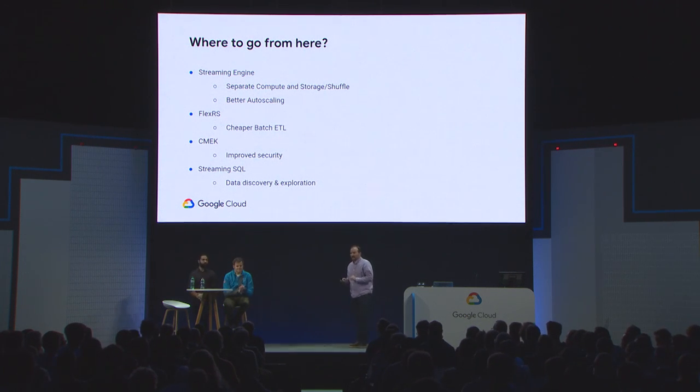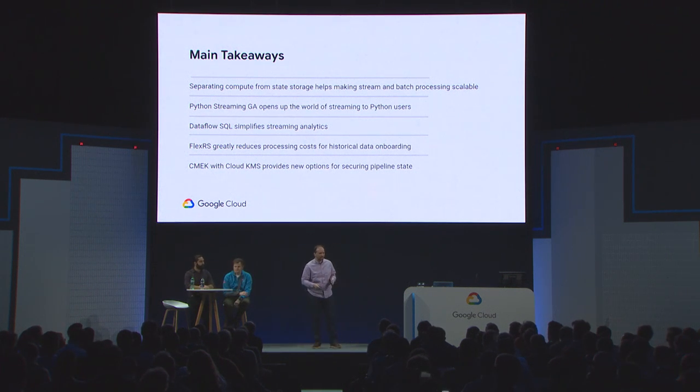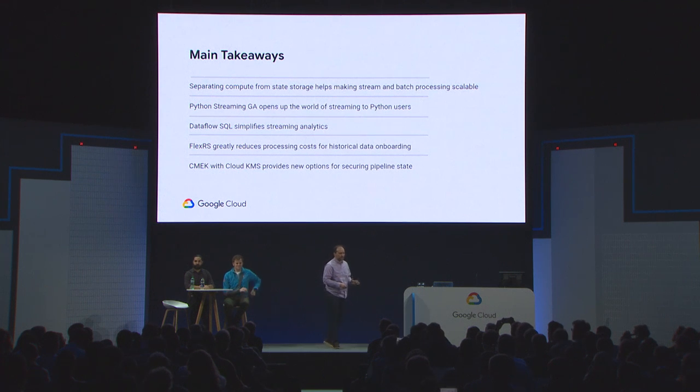Thank you so much for joining us today. Let's quickly recap: separation of compute and state storage lets you save costs and get more responsive autoscaling. Python streaming is now in GA, as is Python 3 support. Dataflow SQL is in preview with new features launched today. FlexRS is generally available — go and save those batch costs. And if you'd like to improve manageability of your encryption keys, CMEK is a great choice. Please fill out feedback if you liked the session. Thank you so much.